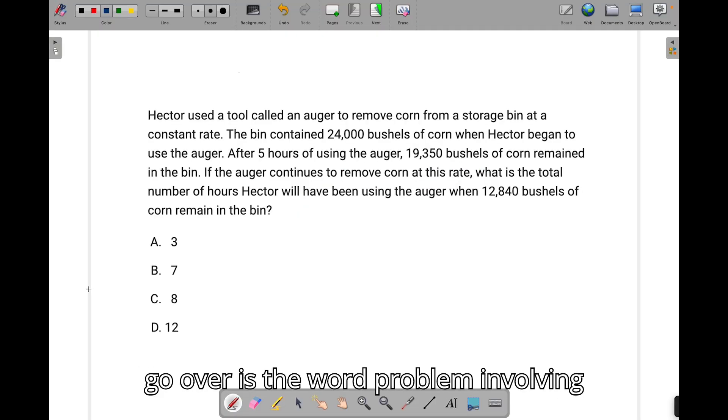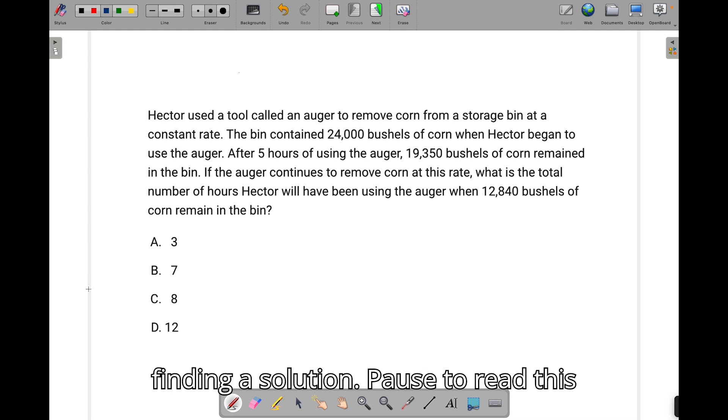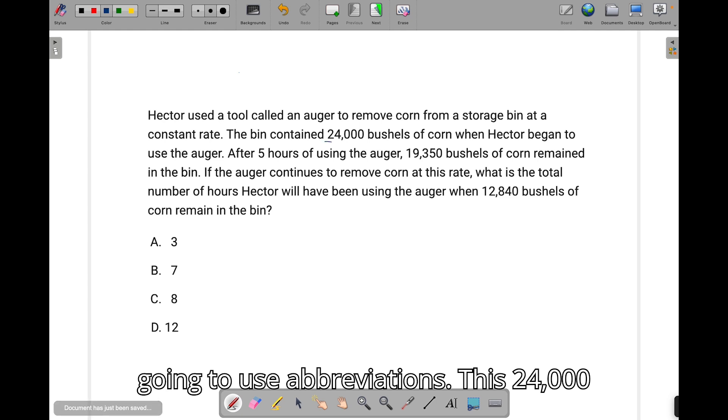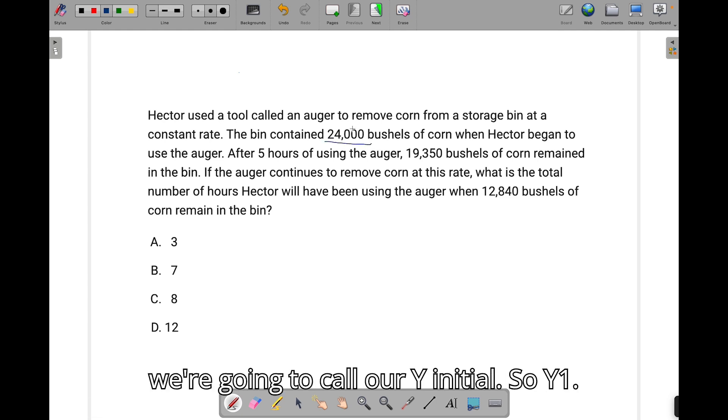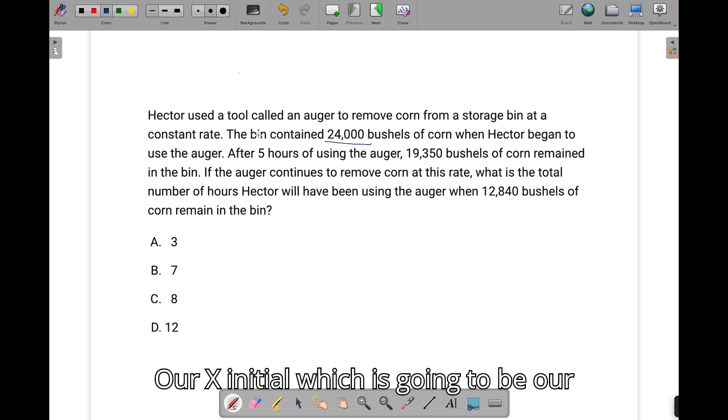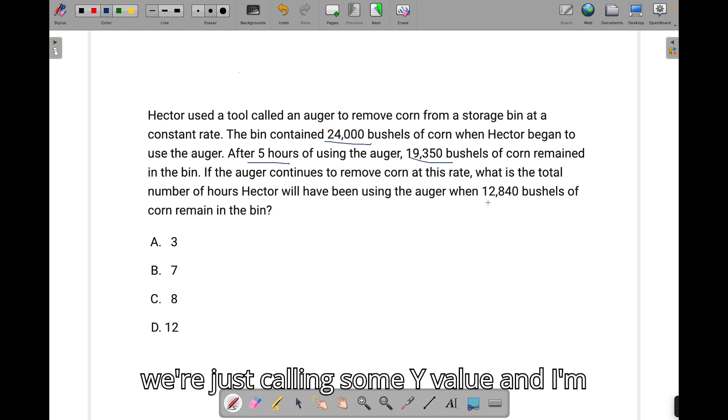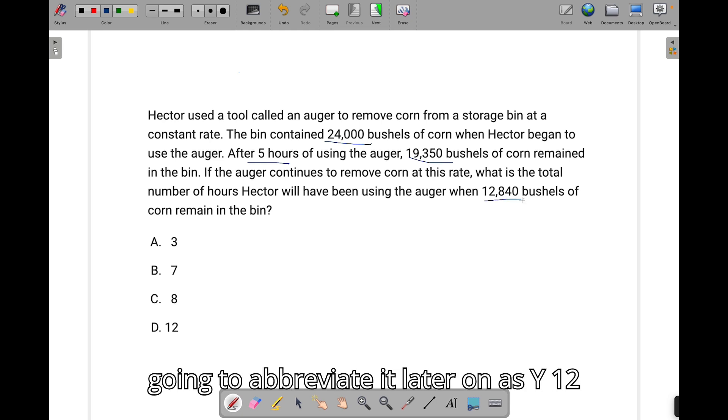The first type of problem we're going to go over is the word problem involving finding a solution. Pause to read this question. Okay, so once you've read this question and tried your attempt, let's go over this. We're going to use abbreviations. This 24,000, we're going to call our y-initial, so yi. Our x-initial, which is going to be our time value, is going to be known as x-initial, which is 0. And our 5 hours is going to be our x-final. So let's underline that. This 19,000 amount is going to be our y-final, which is going to be those bushels. And this 12,800, it's just some y-value. And I'm going to abbreviate it later on as y-12. And we're looking for the number of hours, which is some value x.